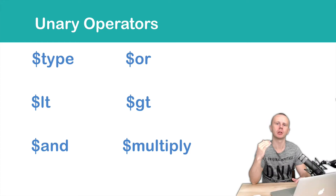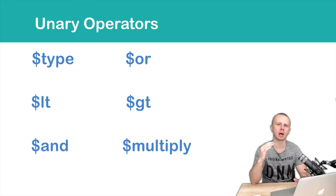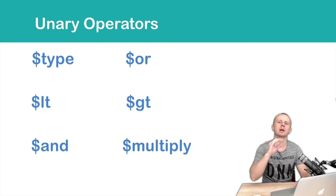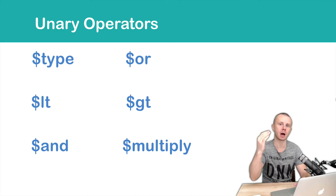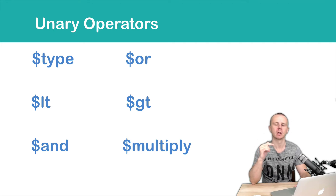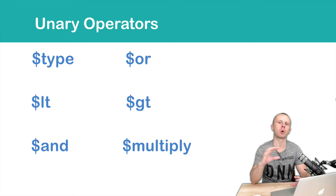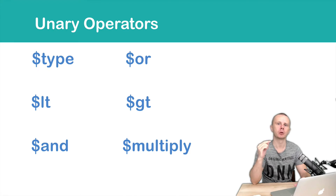Before we talked about accumulator operators; now we will talk about unary operators. The difference is that accumulators perform their operation on a group of documents, accumulating a certain value — for example, sum accumulates a total count. Unary operators perform an operation for each document individually; they don't work for an entire group. That's why unary operators are usually used in the project stage.